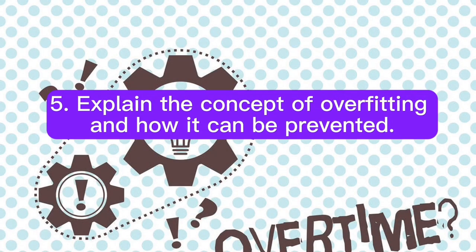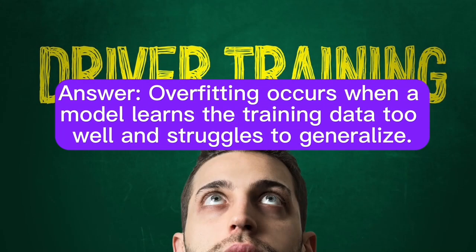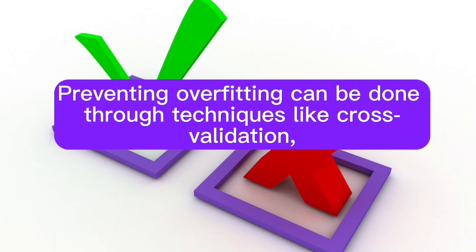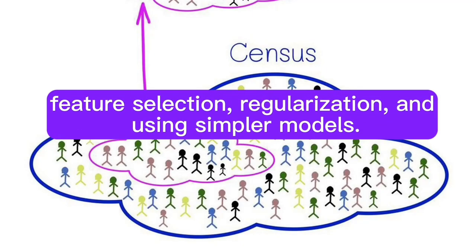Question 5: Explain the concept of overfitting and how it can be prevented. Answer: Overfitting occurs when a model learns the training data too well and struggles to generalize. Preventing overfitting can be done through techniques like cross-validation, feature selection, regularization, and using simpler models.